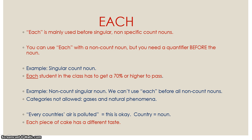If we look at the sentence below: 'Every country's air is polluted' — this is okay. Countries is a possessive plural noun, and air is a gas following a noun, so this is okay. But we can't put the word air right after the word every. Another example of a non-count singular noun would be: 'Each piece of cake has a different taste.' Here, 'piece of' is a quantifier used before the non-count noun cake.